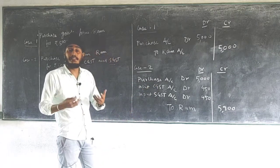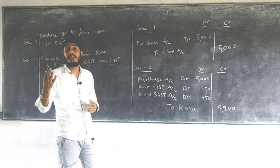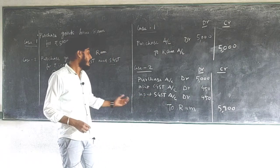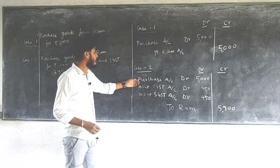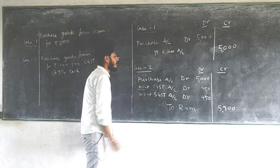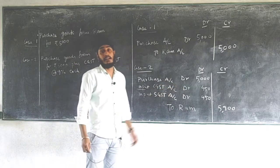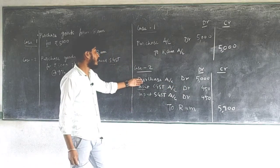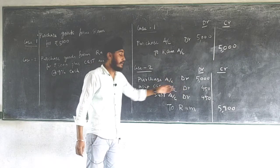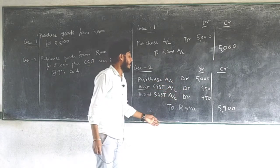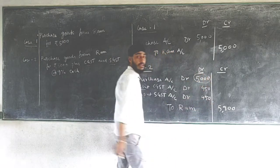When goods are sold outside the state, IGST is applied — then it will be Input IGST Account. Whenever there is a purchase, we write 'Input' on the debit side. The journal entry will be: Purchase Account debit, Input CGST Account debit, Input SGST Account debit, to Ram Account.